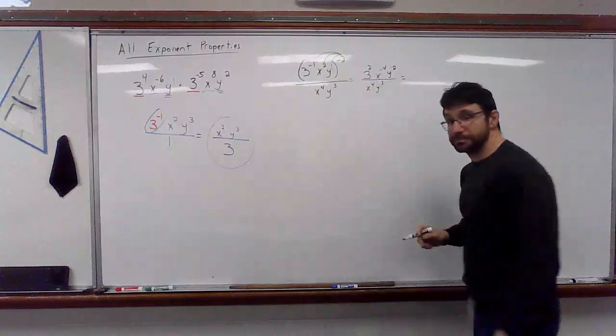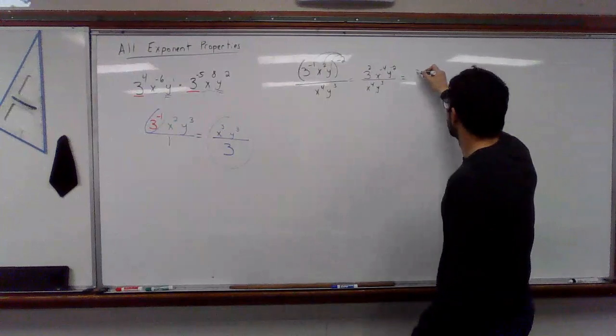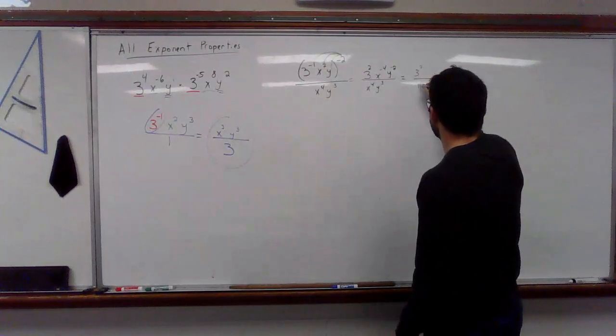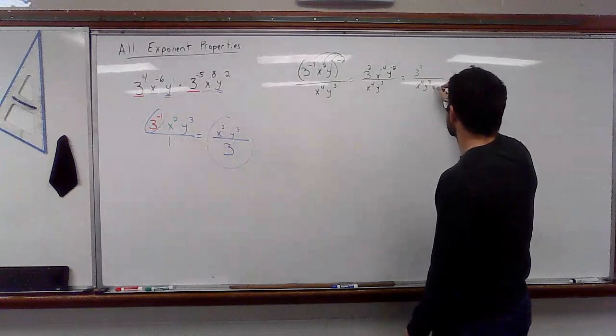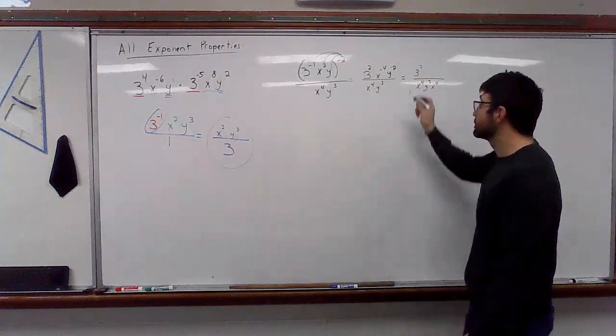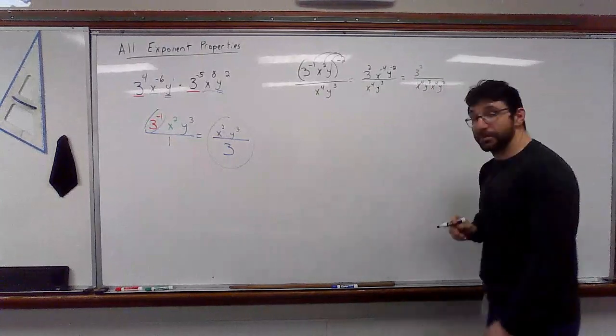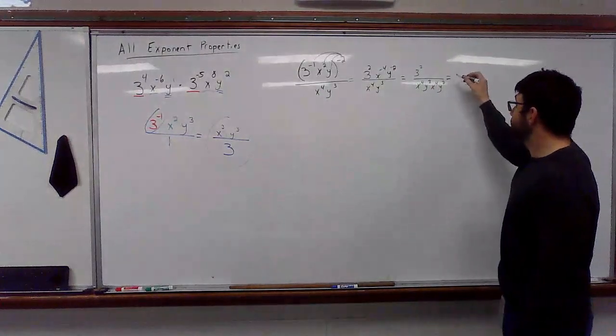Okay. So, we've got a fraction. Everything that has a positive exponent stays. Three squared stays. X to the fourth stays, y to the third stays. Well, this negative four goes to the denominator, becomes positive. The y to the negative two goes to the denominator, becomes positive.